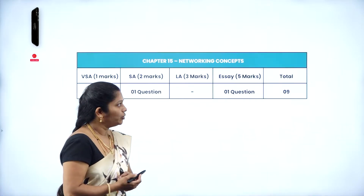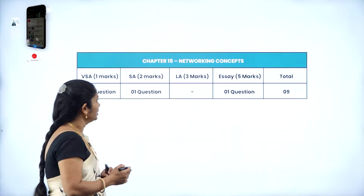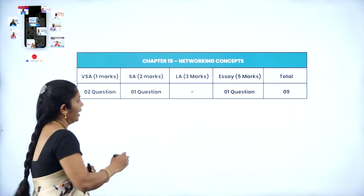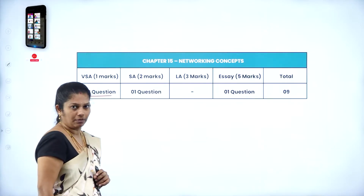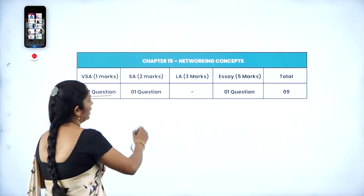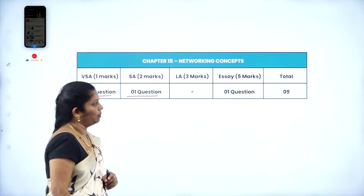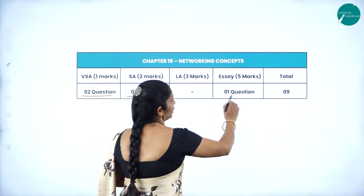In the annual exam, from this chapter you will get totally four questions. In Part A, two questions for one mark each. In Part B, one question for two marks. And in Part D, one question for five marks.